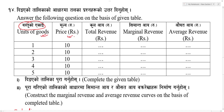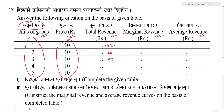The table contains units of goods and price. Units of goods are given, then the price is given, then the total revenue is calculated, then the marginal revenue is calculated, then the average revenue is calculated.